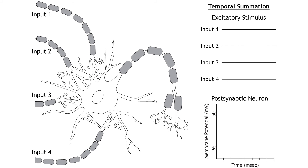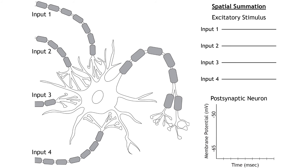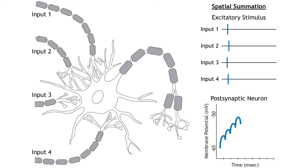EPSPs can summate via temporal or spatial summation. Temporal summation occurs when a presynaptic neuron — input 1 in the animation — stimulates the postsynaptic neuron multiple times in a row. Spatial summation occurs when more than one presynaptic neuron — inputs 1 through 4 in the animation — each stimulate the postsynaptic neuron at the same time. In both cases, the EPSPs of each stimulation will add together to cause a stronger depolarization of the membrane potential of the postsynaptic neuron than one excitatory stimulus alone.